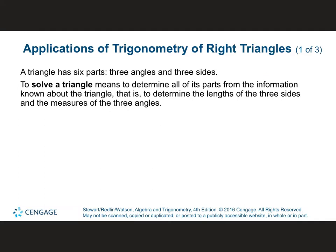A triangle has six parts — three angles and three sides. How many degrees are in one triangle? 180. So if you have two of the angles, you add them together and subtract from 180 to find the third.